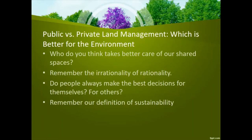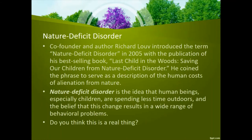Do people always make the best decisions for themselves? What about for others? Remember our definition of sustainability from earlier in the term. Before we close out and look at conservationism and the history of the National Park Service, I want to talk briefly about nature deficit disorder. This has become an increasing problem, especially because of the pandemic. Co-founder and author Richard Louv introduced the term nature deficit disorder in 2005 with the publication of his bestselling book, Last Child in the Woods: Saving Our Children from Nature Deficit Disorder. He coined the phrase to describe the human cost of alienation from nature. So what is nature deficit disorder? It's the idea that human beings — especially children — are spending less and less time outdoors, and the belief that this change is resulting in a wide range of behavior problems. Do you think this is a real thing?